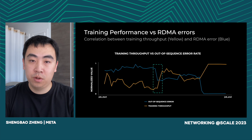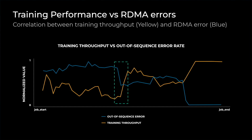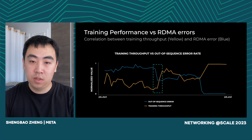This is an example showing the correlation between the training throughput and out-of-sequence error. The blue line represents the out-of-sequence error rate, while the yellow line represents the training throughput. In this job, out-of-sequence error appears since the very beginning. However, from the green zone we can see, with the drop of out-of-sequence error, the training throughput has a big increase. And when the out-of-sequence error finally went away, the training throughput became very stable. This example indicates that out-of-sequence error can correlate with the performance of a training job.